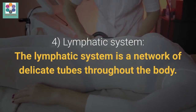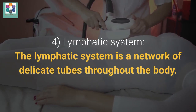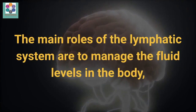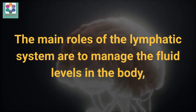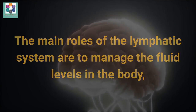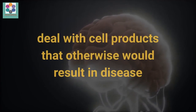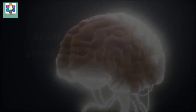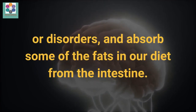4. Lymphatic system. The lymphatic system is a network of delicate tubes throughout the body. The main roles of the lymphatic system are to manage the fluid levels in the body, react to bacteria, deal with cancer cells, deal with cell products that otherwise would result in disease or disorders, and absorb some of the fats in our diet from the intestine.